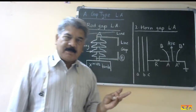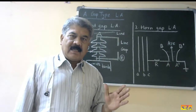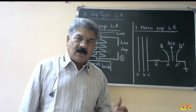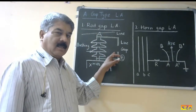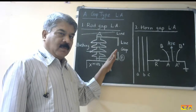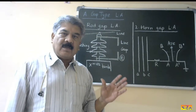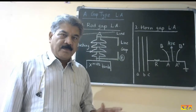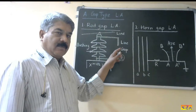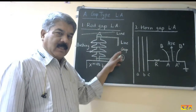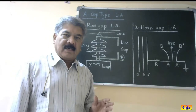This is the simplest lightning arrester. Advantages: number one, it is the simplest; number two, it is cheap. But there are a lot of drawbacks. Drawback number one: there is no other medium to extinguish the arc, therefore the arc persists for a longer time. Number two, even after discharge of the lightning overvoltage, the arc remains and due to that arc the power frequency follow current continues to flow for a long time.